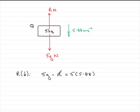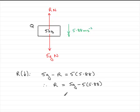We rearrange to make R the subject: R equals 5g minus 5 times 5.88. Taking g to be 9.8 and calculating, we get R equals 19.6 newtons. And so that is the force acting on Q.